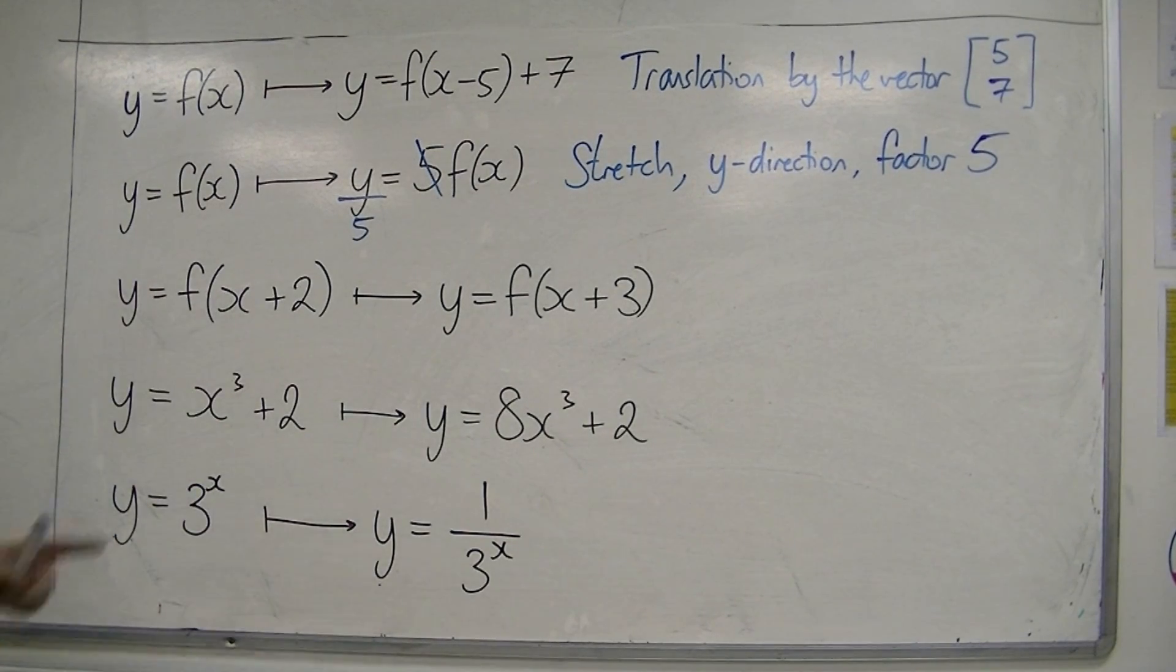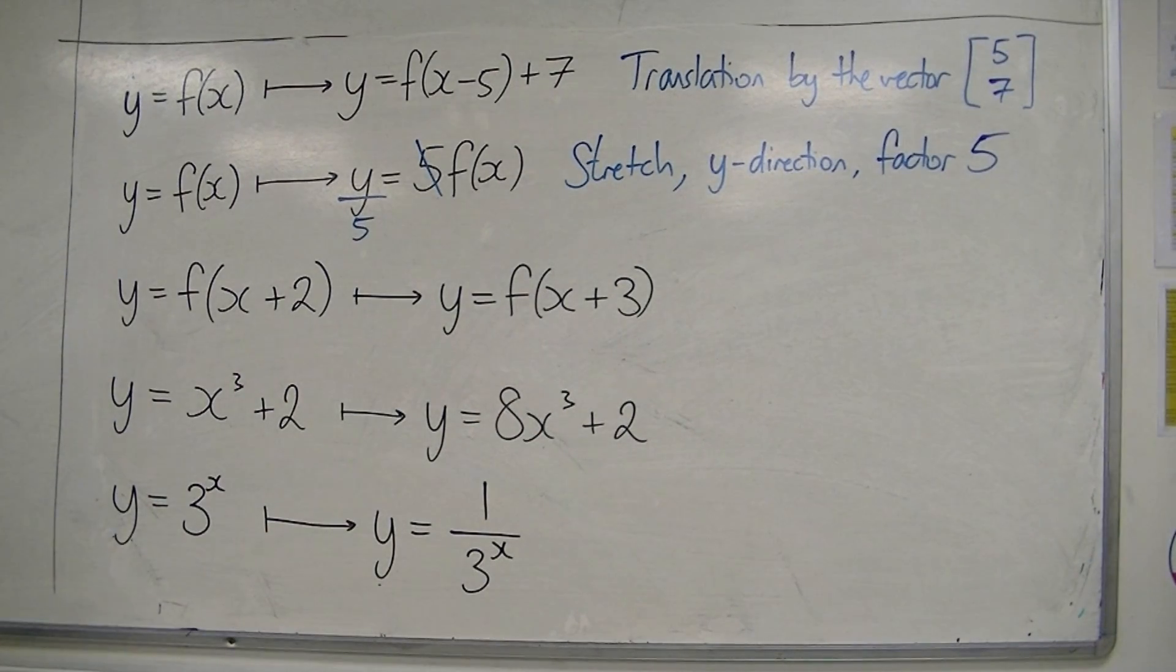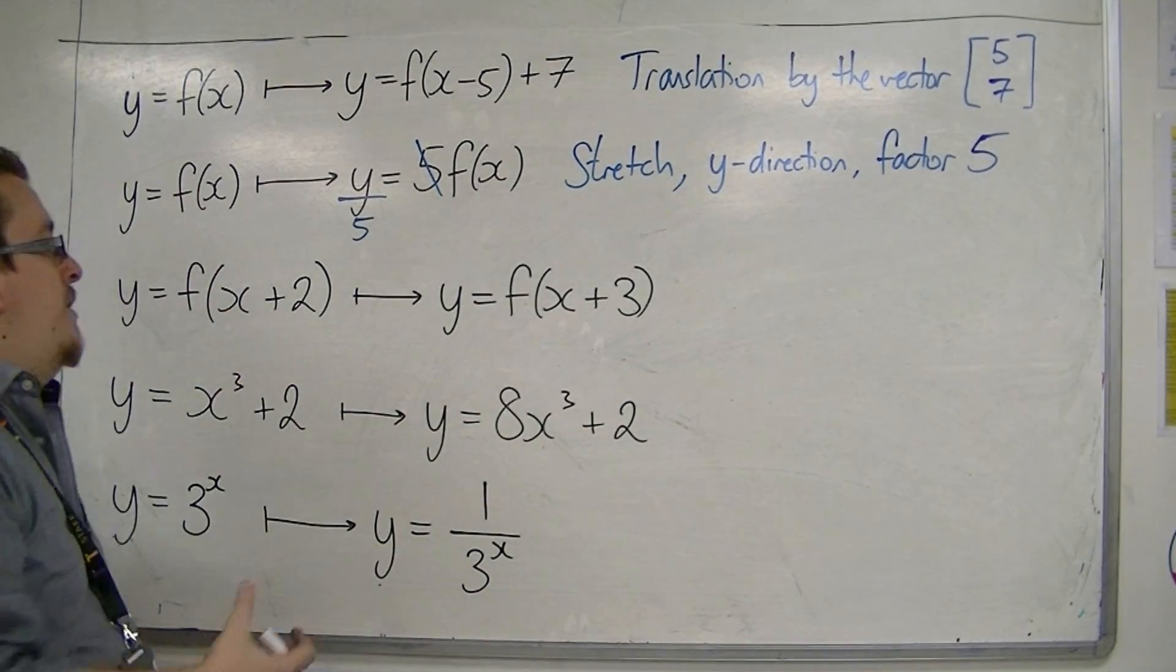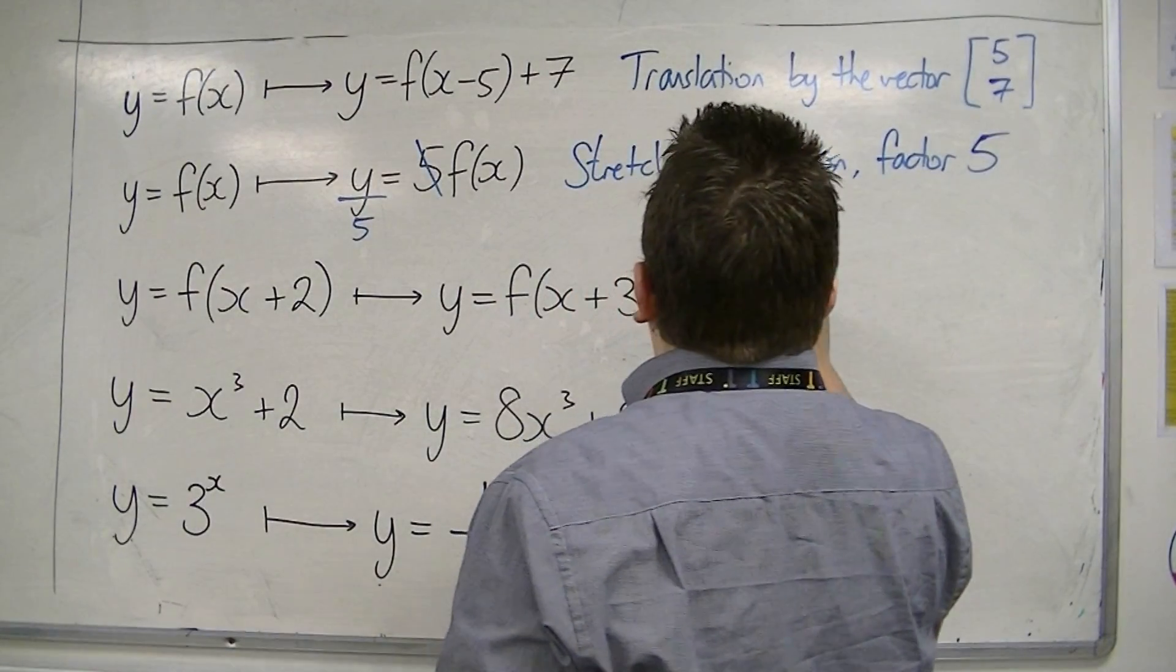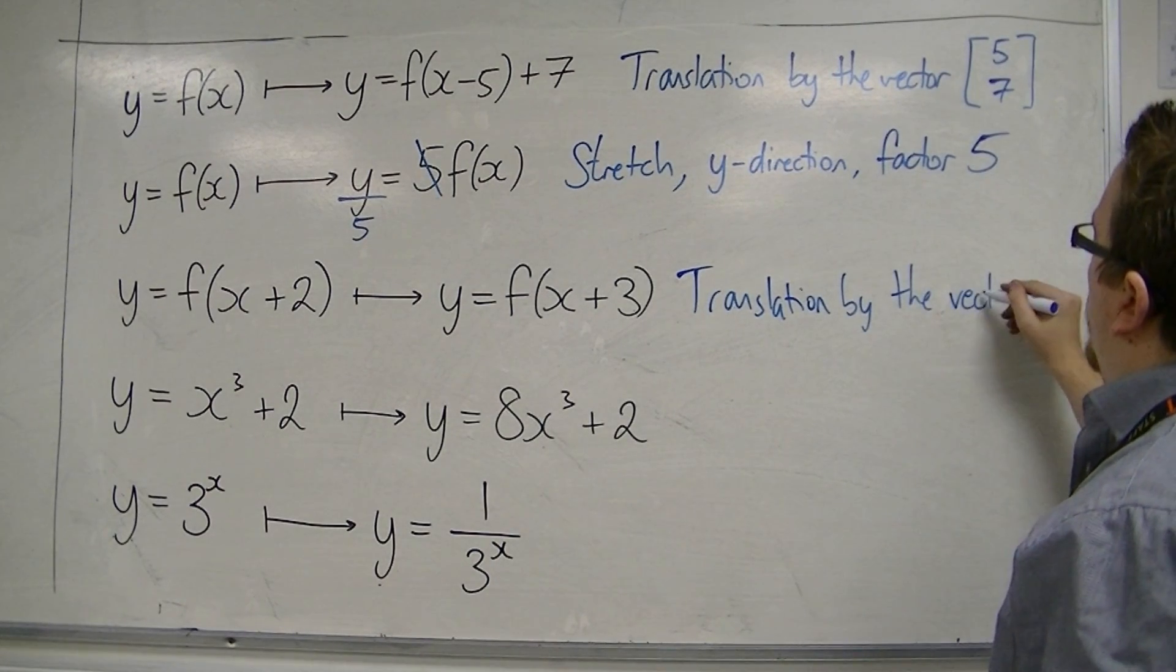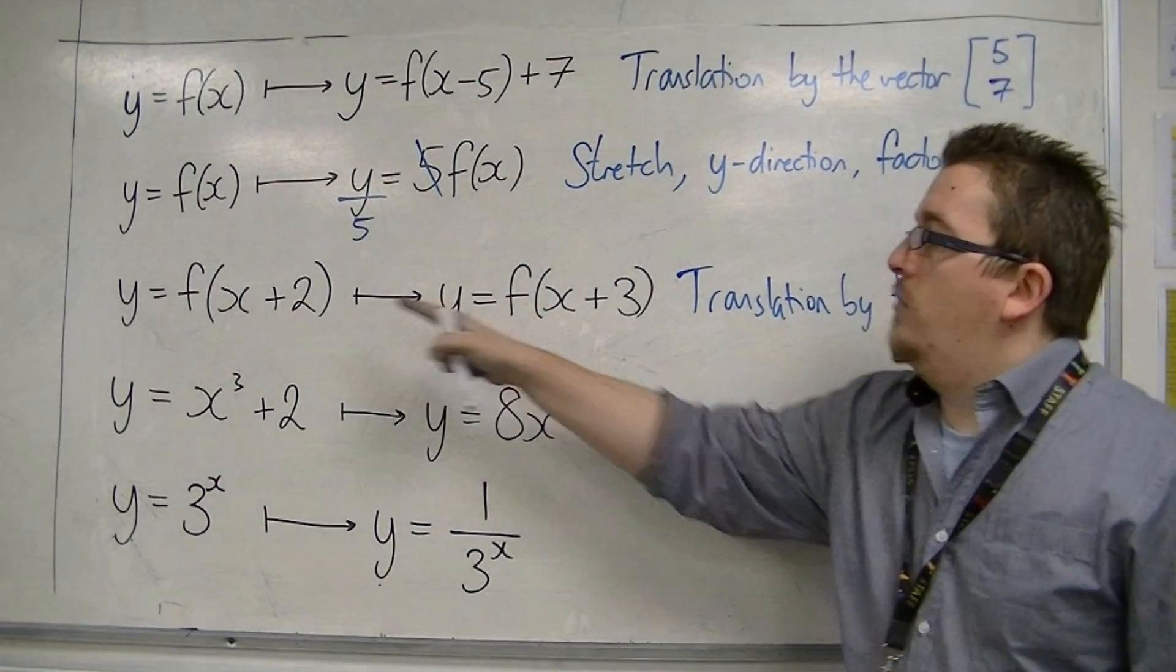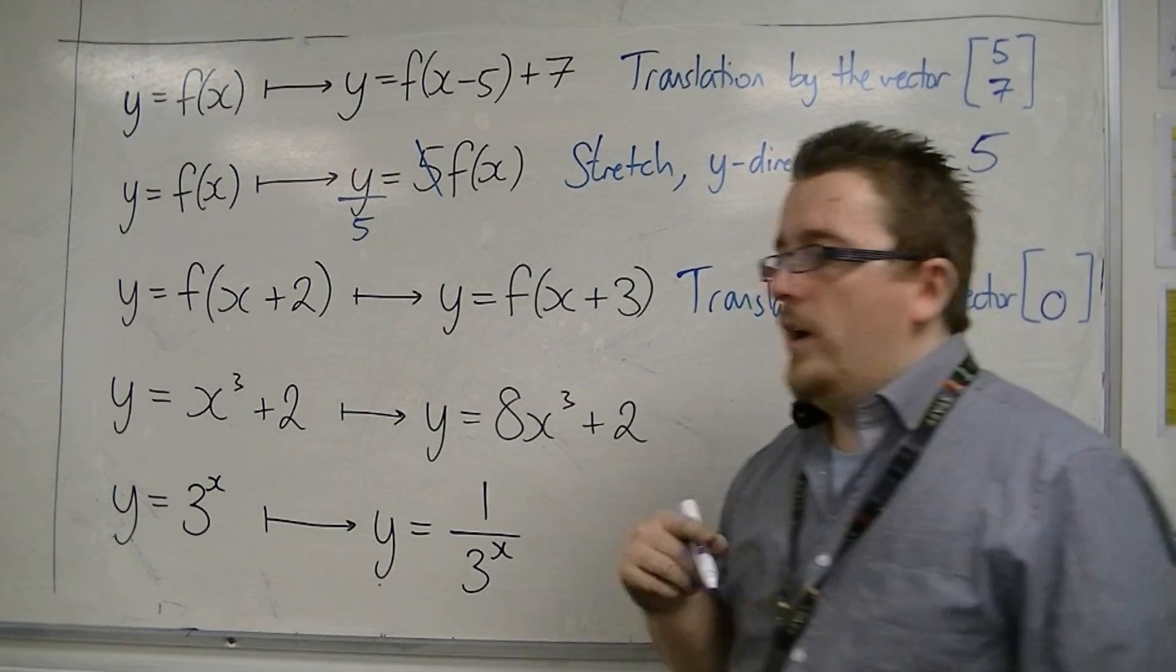Let's look at this third one. y equals f of x plus 2 goes to y equals f of x plus 3. Well, it would go from x plus 2 to x plus 3, so actually I've added 1. And because I've added 1, this must be a translation by the vector. I just need to identify what that vector would be. The number outside the bracket is still 0. It hasn't changed. So I know that there is no change in the y component.